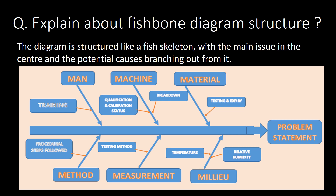Explain the fishbone diagram structure. The diagram is structured like a fish skeleton, with the main issue at the center and potential causes branching out from it. We evaluate potential causes such as man, machine, material, method, measurement, and milieu — where milieu refers to environmental factors.